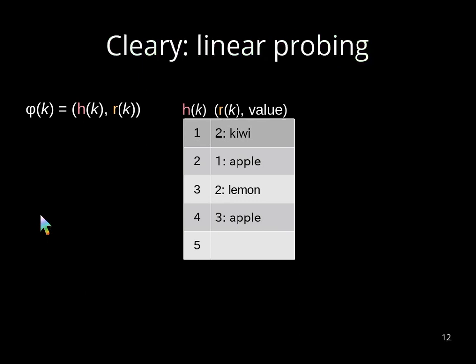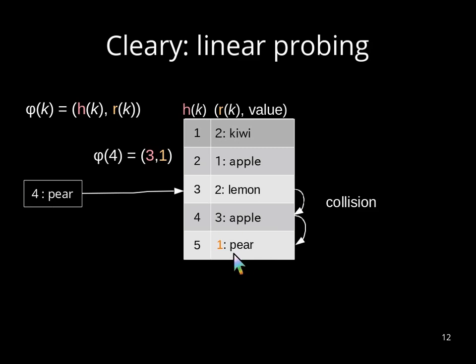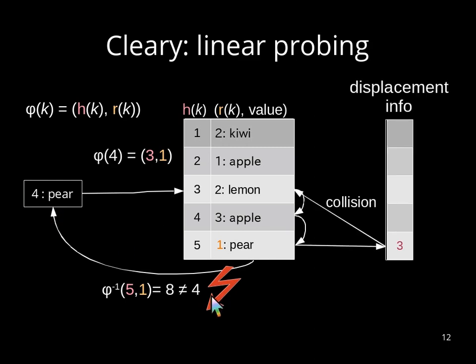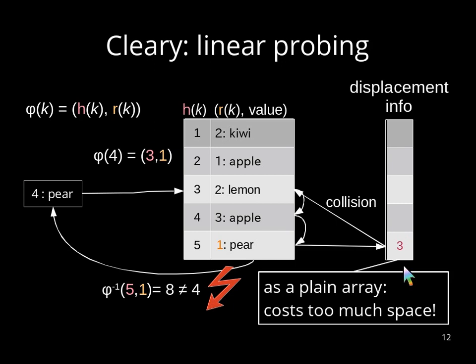Now, what happens when there is a collision? For that, Cleary resorts to linear probing, which means that, for instance, when we have a new element 4 pear, we go to the hash value 3 and find that it's already occupied. So we scan downwards until we arrive at the first empty cell and there we insert the element pear with remainder 1. But now the problem is that the inverse function no longer retrieves us the key. So we need an additional information, which is called displacement info. And you can store that as a plain array, just saying that it was 3. And with that, we can restore the key back. But the problem is that this displacement info in its plain form takes a lot of space.